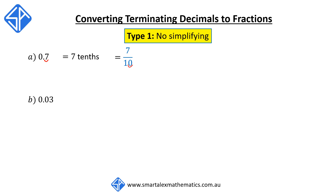Our second example is 0.03. Two digits after the decimal point — we read this as 3 hundredths, and as a fraction, this is 3 over 100. Here we have two digits after the decimal point, which corresponds to two zeros after the one.